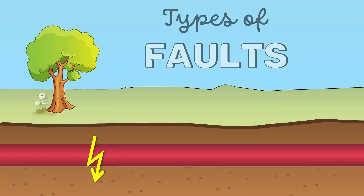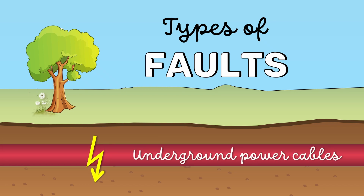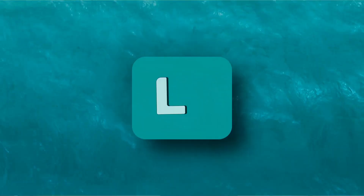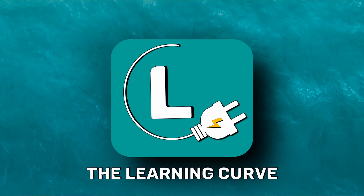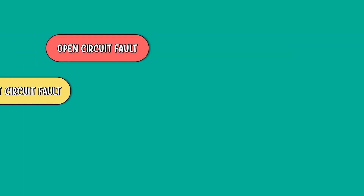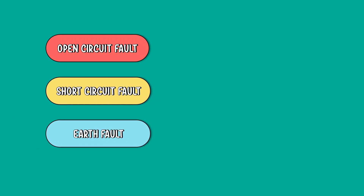In today's video, I am going to talk about the types of faults that are likely to occur in underground power cables. Hi, I am Benila and you are watching The Learning Curve. There are three types of faults that occur in underground power cables: open circuit faults, short circuit faults, and earth faults.